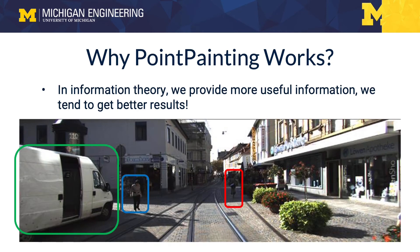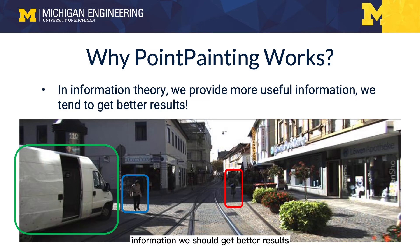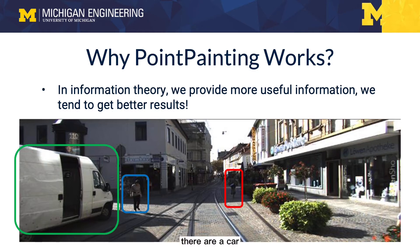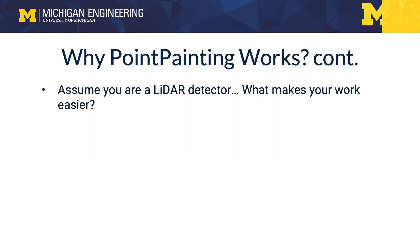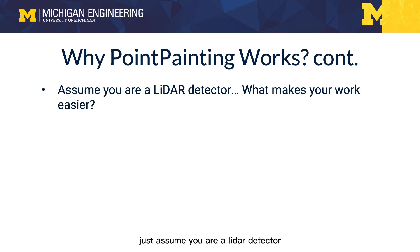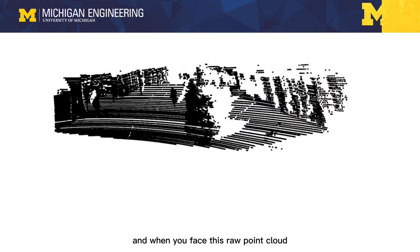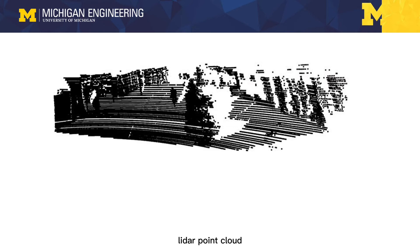So why does Point Painting work? In information theory, we believe that when we provide more effective information, we should get better results. In this image, you can clearly see there is a car, a person, and a cyclist. Just assume you are a LiDAR detector — when you face a raw point cloud, it is very hard to know what objects are present. Even if you are very experienced with raw LiDAR point clouds, this task is still very difficult.